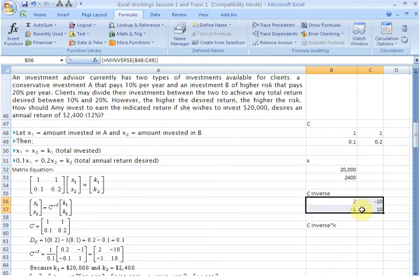And there we have our C inverse, which is this item here: 2, minus 10, minus 1, 10.